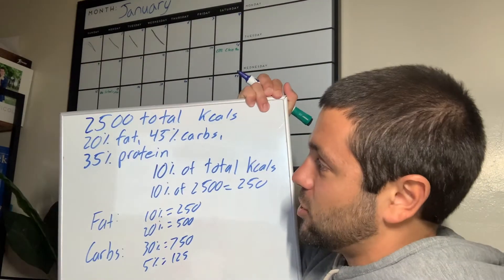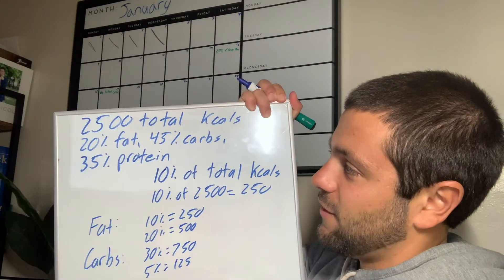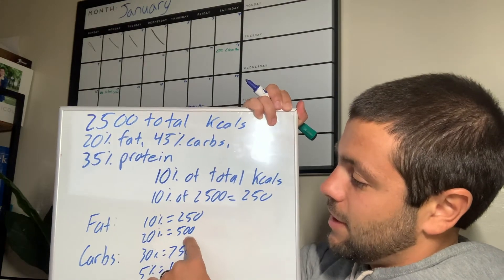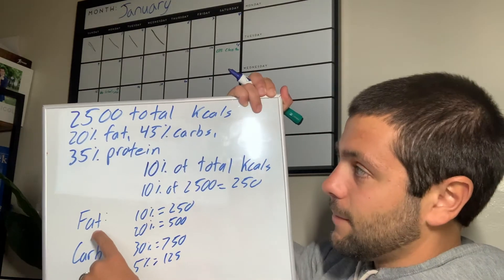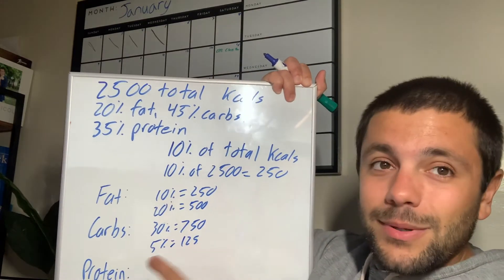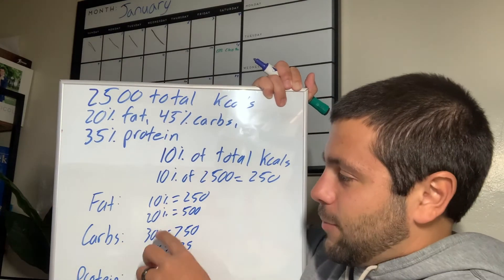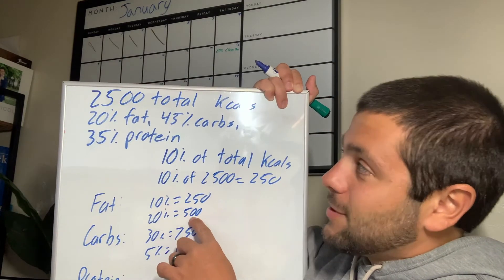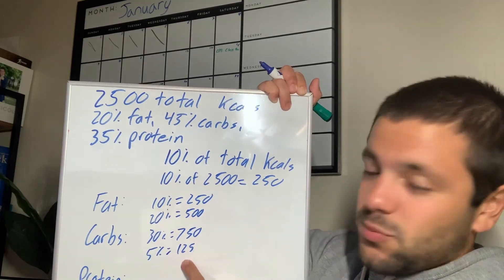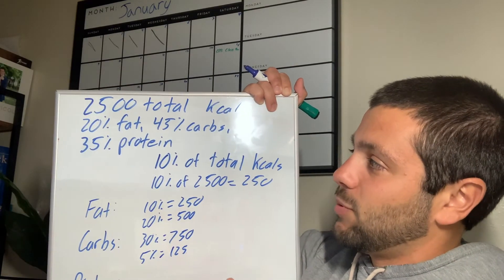So now with some of this information I can figure this out. For example, 20% fat — I go to 20% here, so 500 of my kcals are coming from fat. Carbs is 45%. If I have 20%, multiply that by 2, that's 40%, so that's 1,000 kcals. But I need an extra 5%, so it's 1,000 plus 125, which gives me 1,125 kcals.